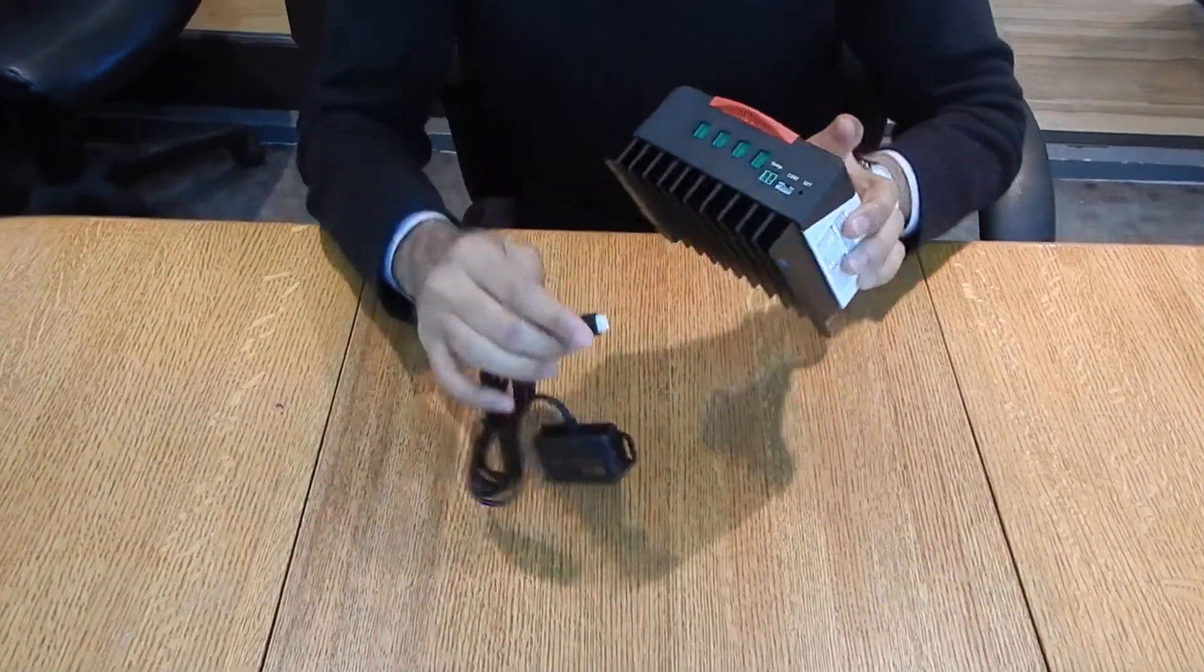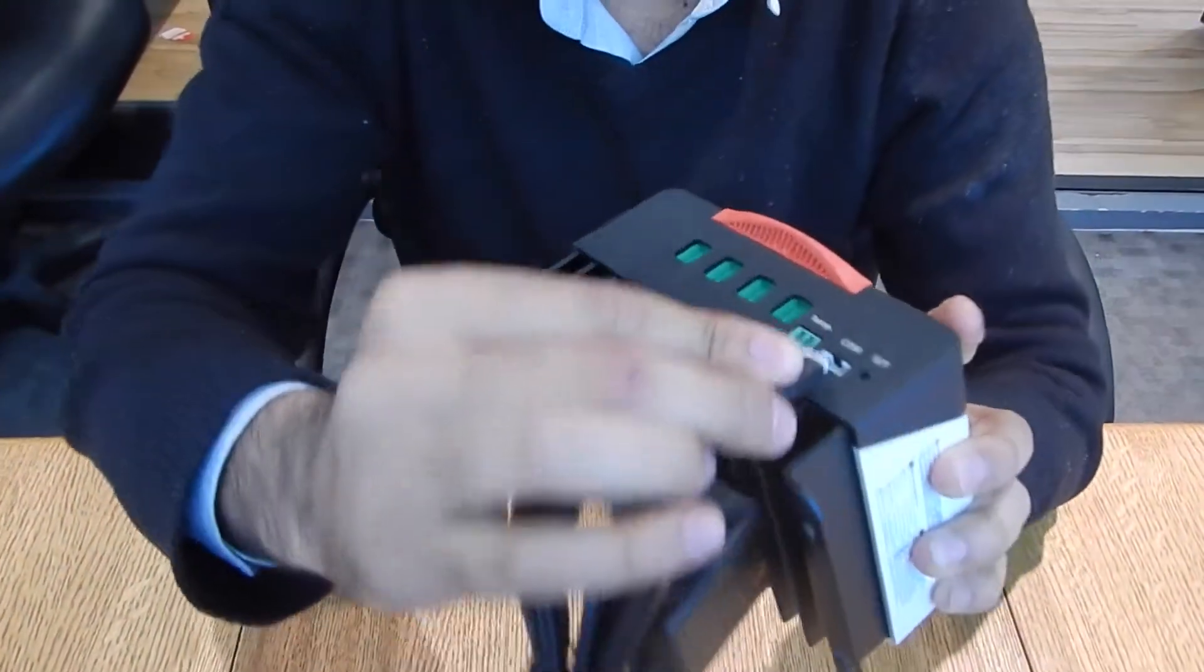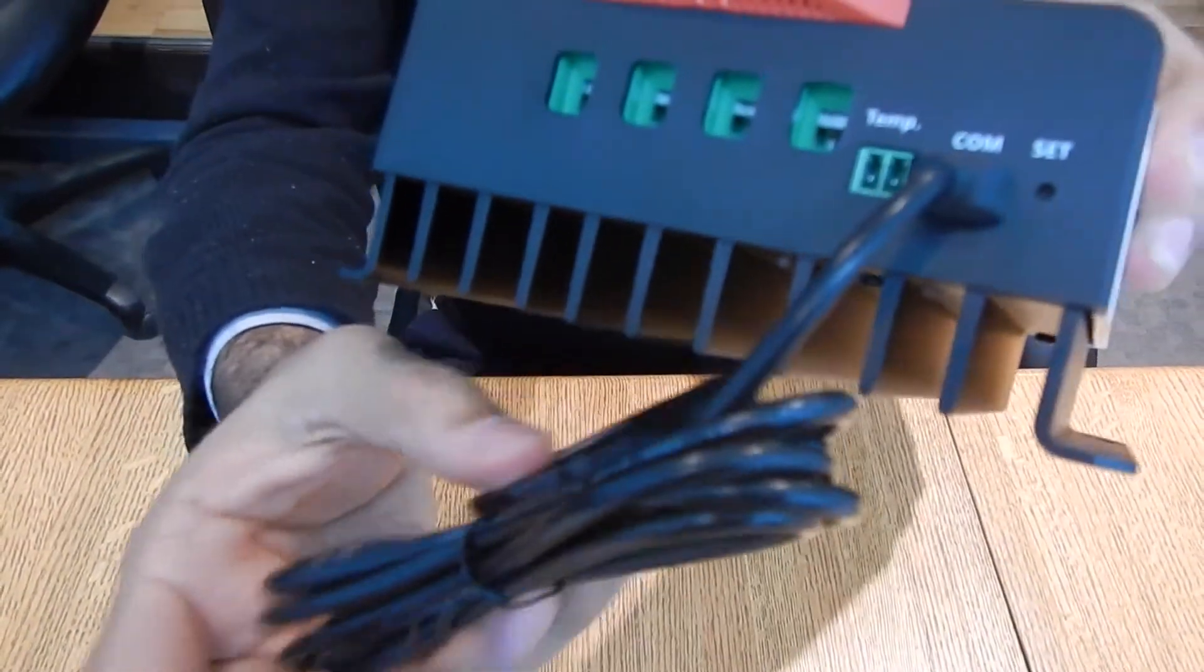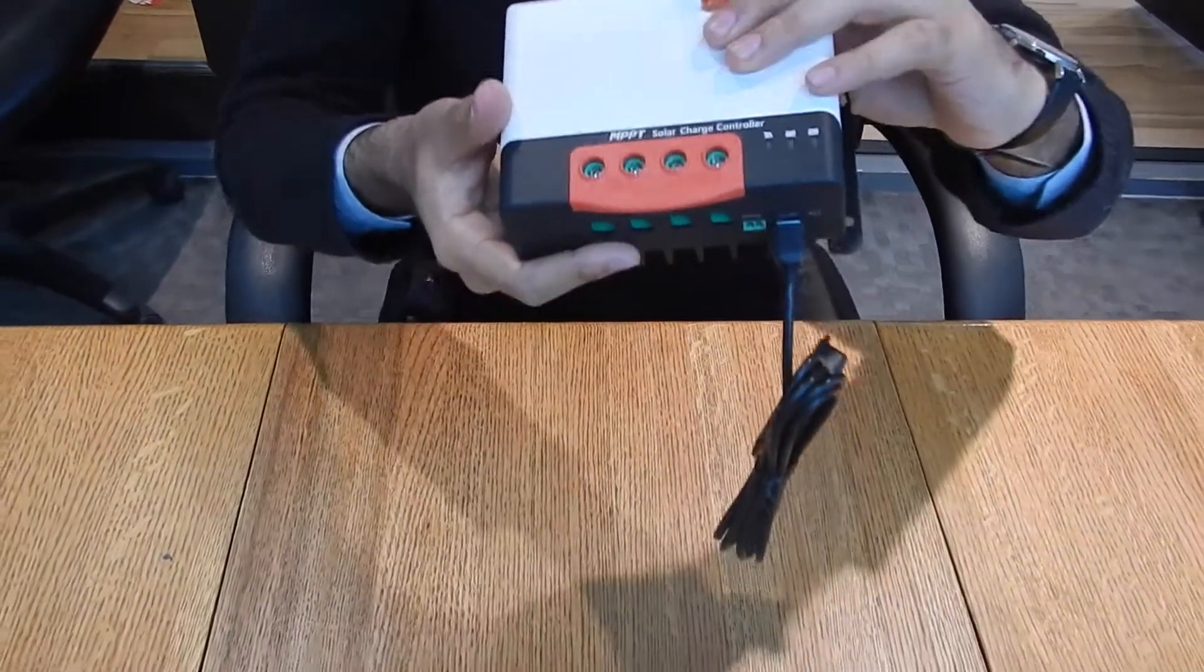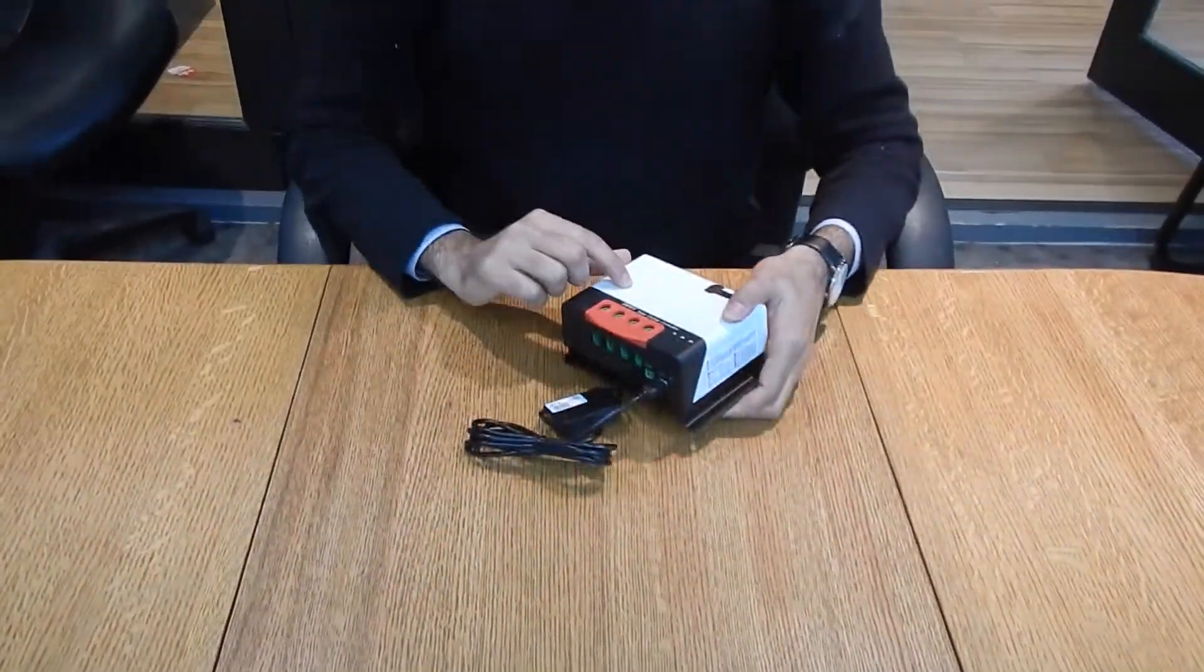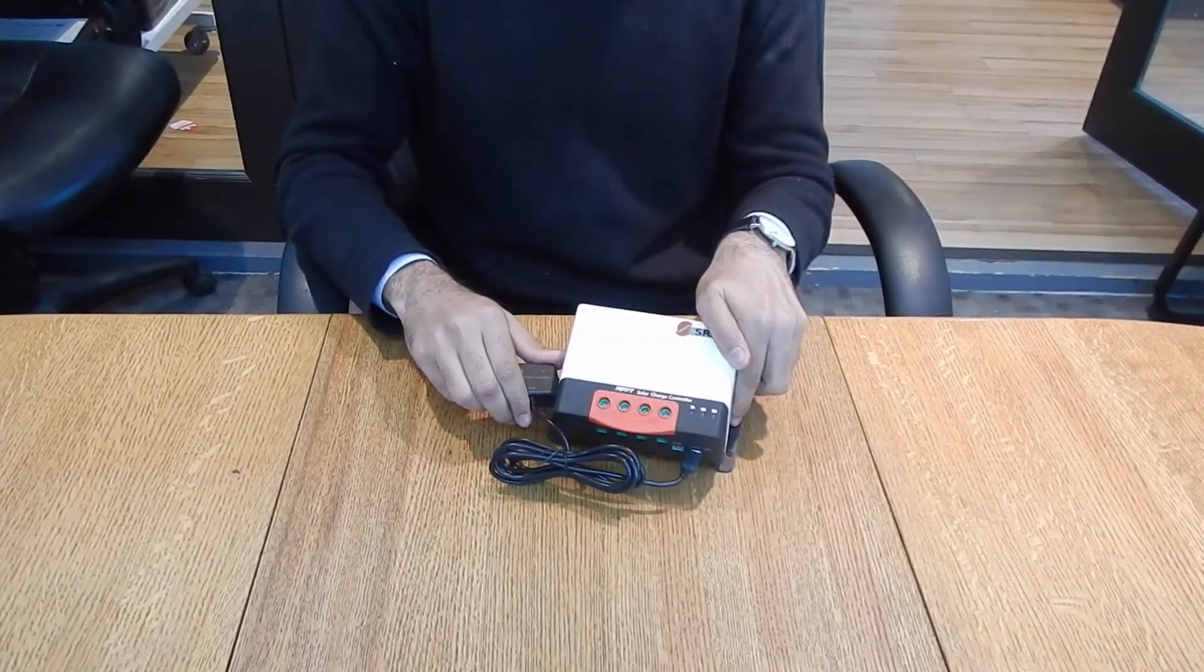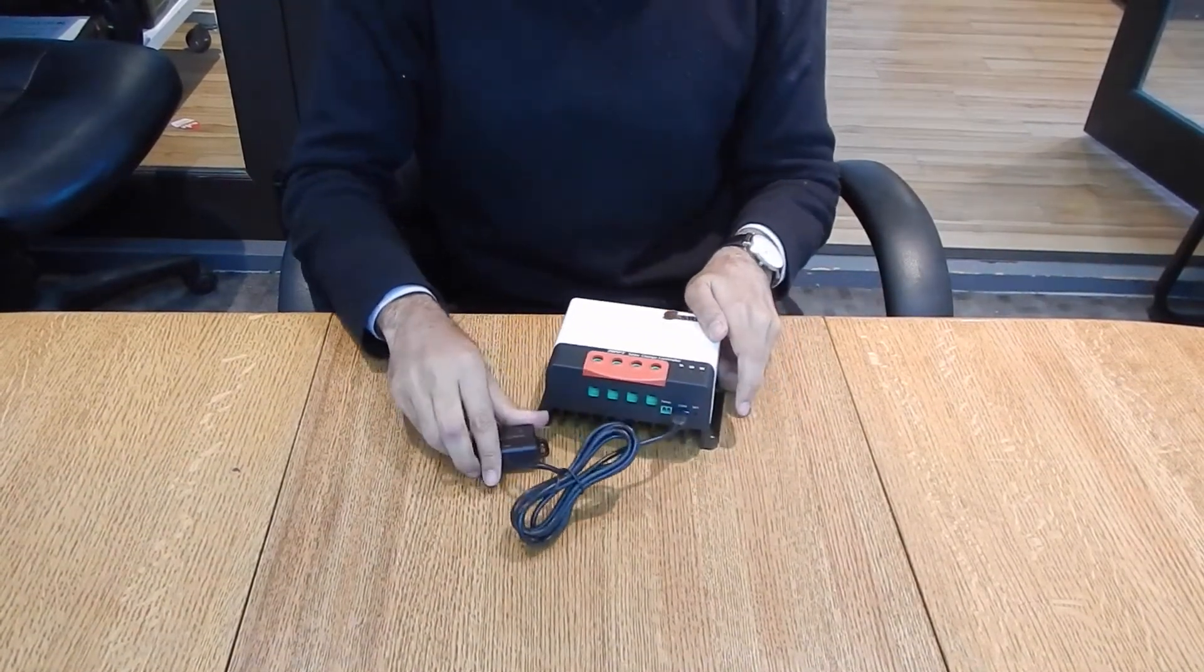There is a pin with it and then there's a COM port where you can attach the Bluetooth adapter. Then you can just download the app and control this solar charger through your phone. This is the MC 24 volt 30 amp charge controller.